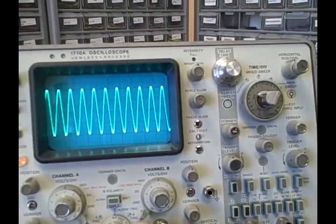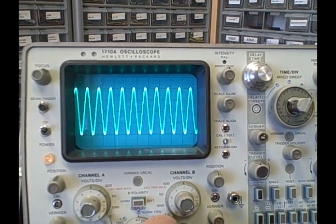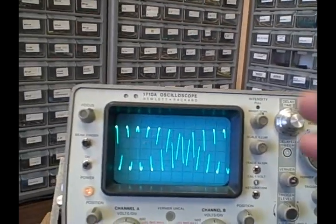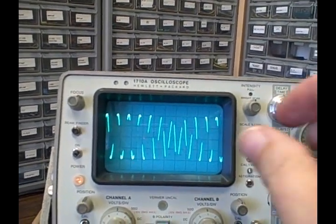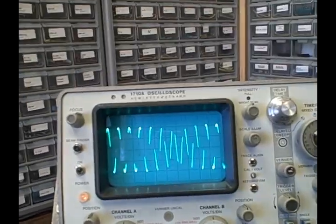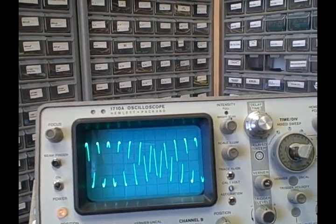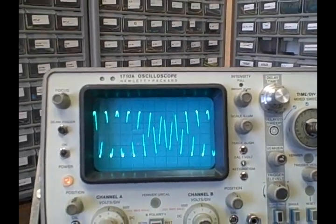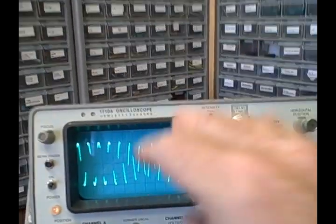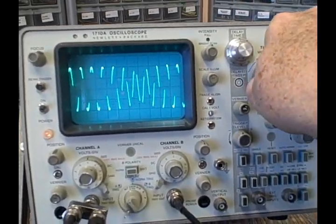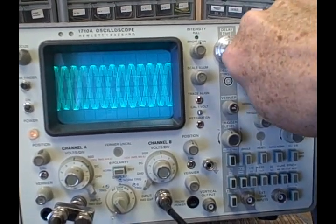We're in alternating mode right now. We could go to chopped mode, and in chop mode you get a view of the incoming waveform over different periods of time, so it's blinking in and out. This would be fine for a slower trace.